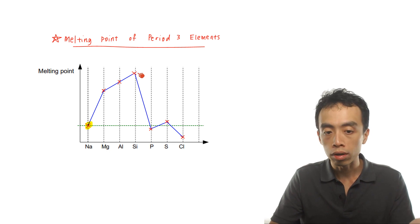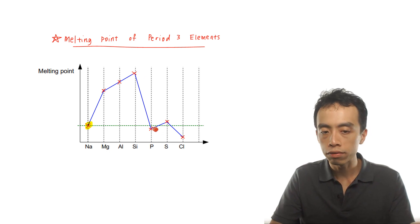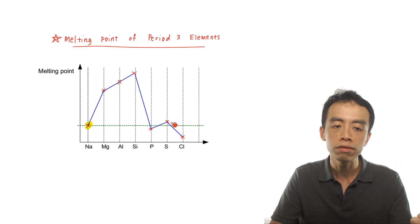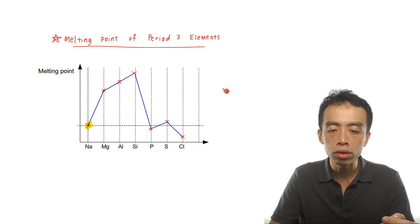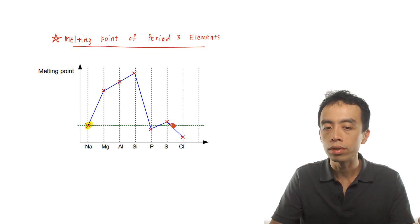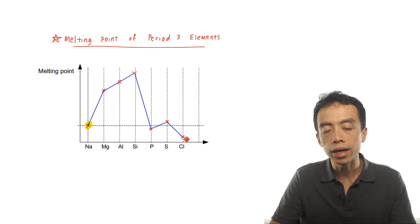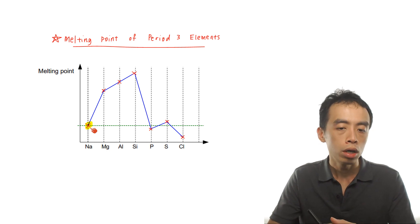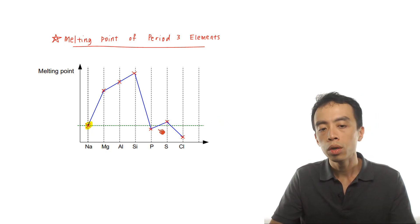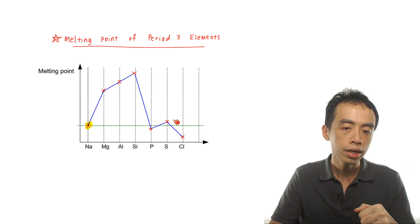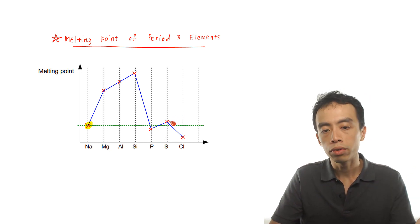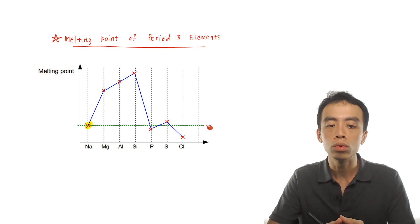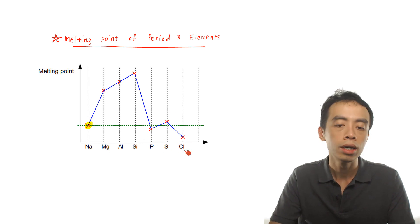The melting point of phosphorus is actually slightly below sodium. The melting point of sulfur is slightly above sodium. And the melting point of chlorine is much lower than sodium, so it decreases all the way down. Using sodium as a benchmark makes it easier to determine the melting points of these non-metal elements.